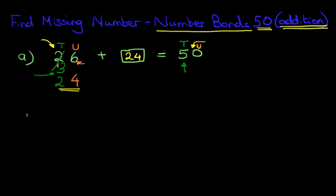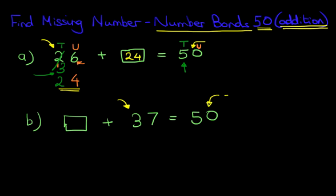We're now going to move on to a second example and we're going to use the same method as above. We've got something plus 37 equals 50. Now using the same method, we are going to start at number 37 and we're going to add the number which makes it equal to 50.